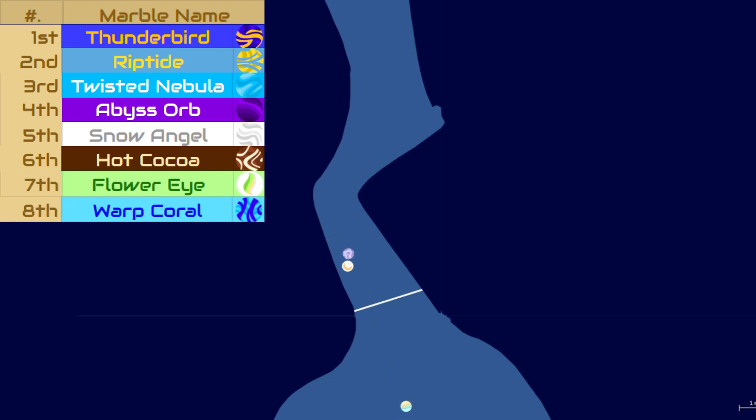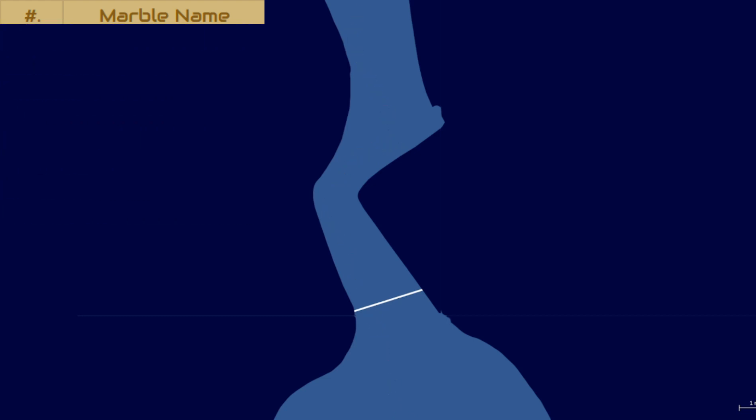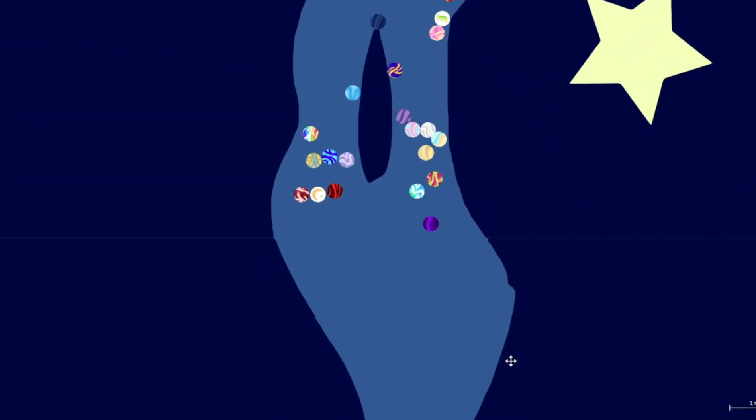Behind them, Snow Angel, Granola with Hot Cocoa, Flower Eye, and Warp Coral round out the top eight for this race. Other marbles flooding in now: Scorching Kepler, Con Candy, and Golden Glare. Another bad race for them. Thankfully, I do not think any other marbles got stuck on the course.